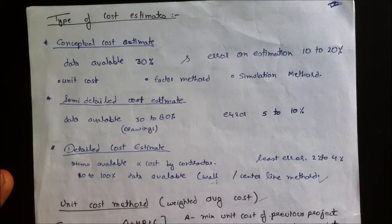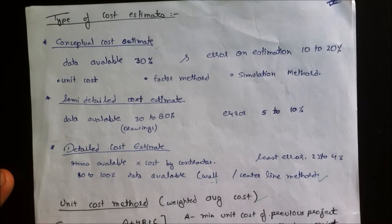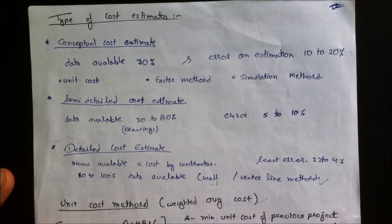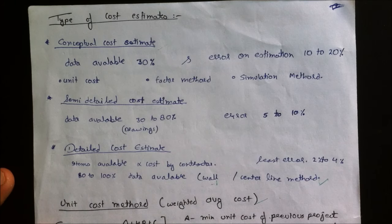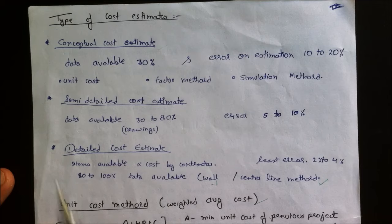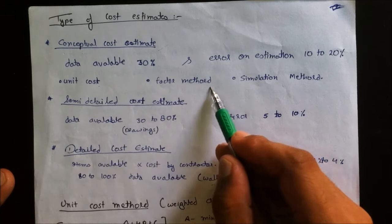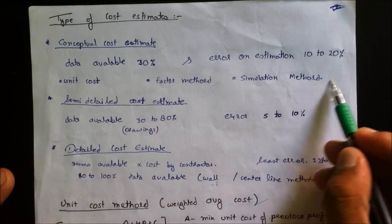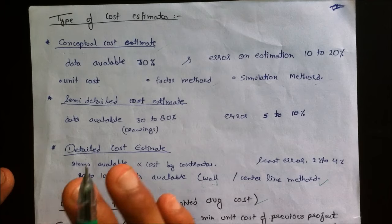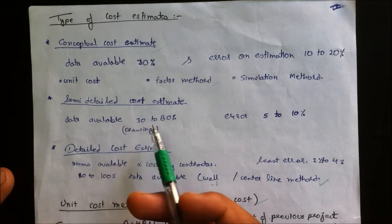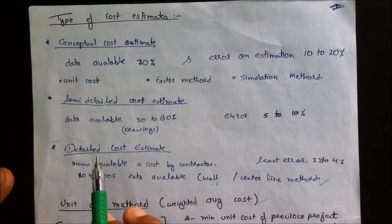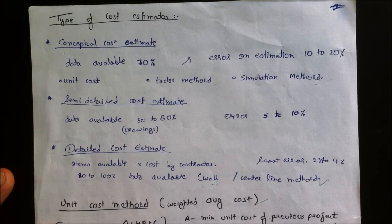There are three types of cost estimates. The conceptual cost estimate applies when data available is less than 30% and the cost estimation error may be 10 to 20%. Methods used include the unit cost method, factor method, or simulation method. Semi-detailed cost estimate applies when data available is 30 to 80%, including drawings, sheets, and construction methods.